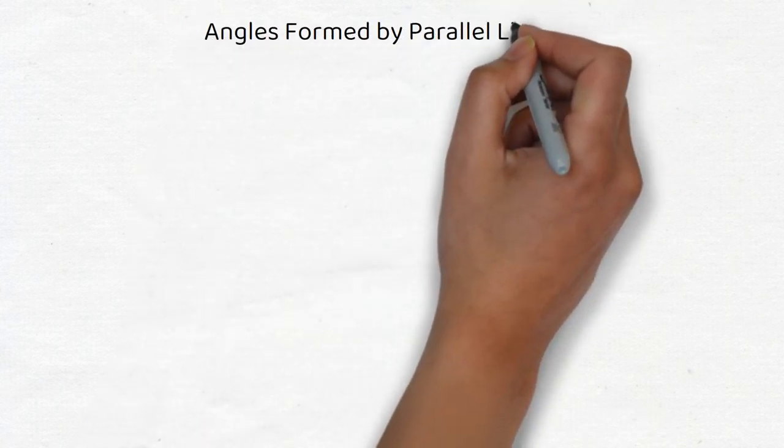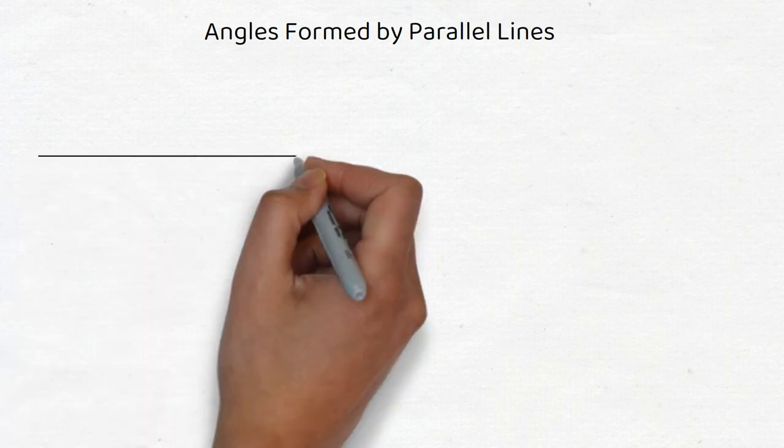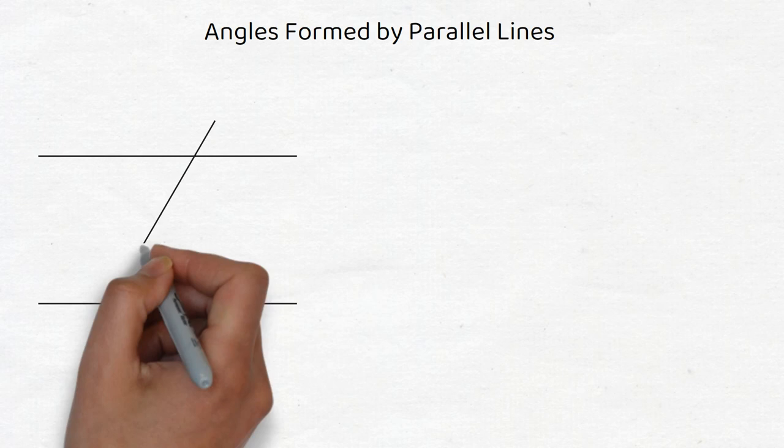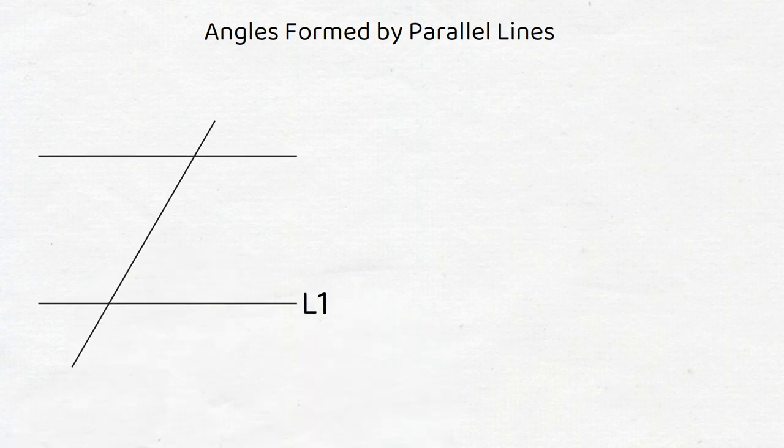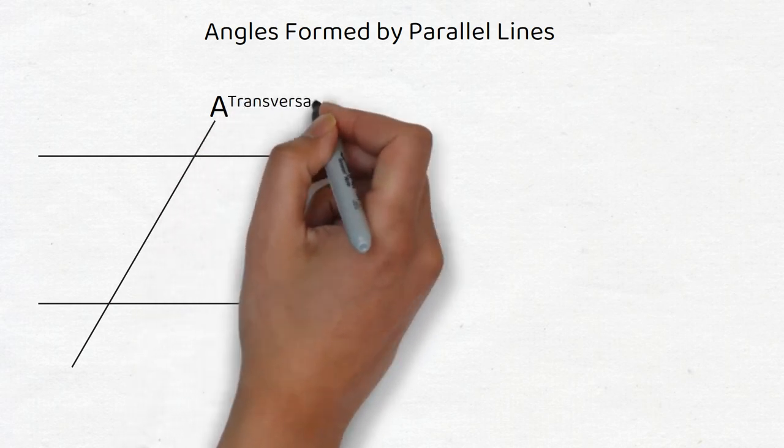Angles formed by parallel lines. Two lines are said to be parallel if they do not intersect. In this example, let line 1 and line 2 be parallel lines, and the other line, line L, is a line that cuts through both parallel lines. This line is called a transversal.